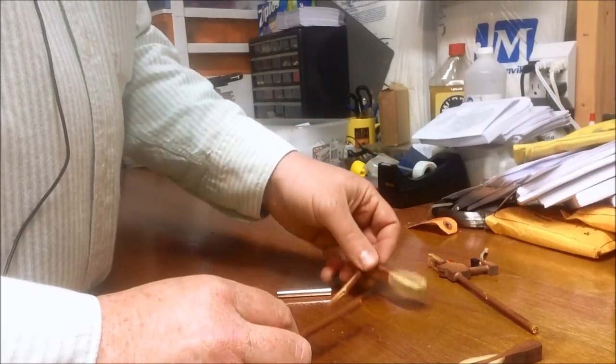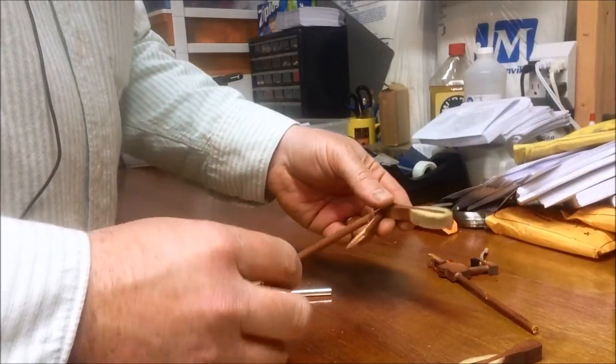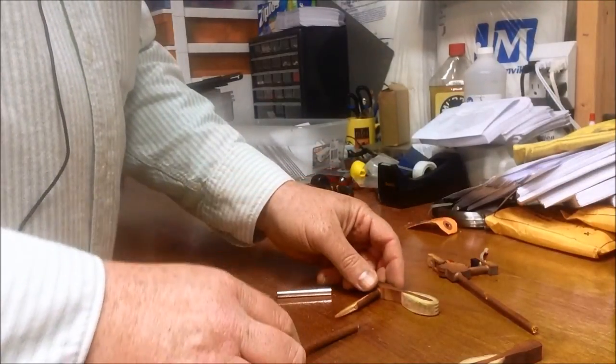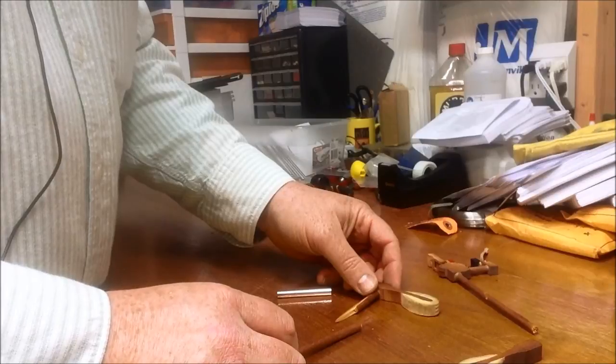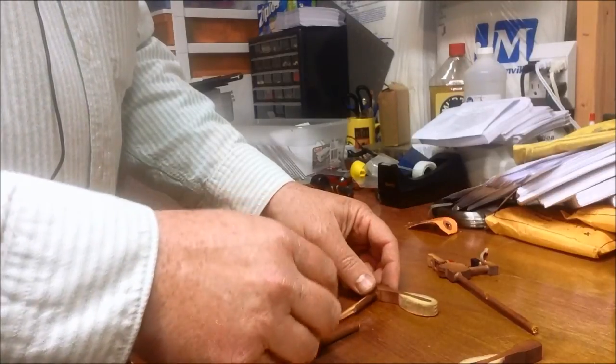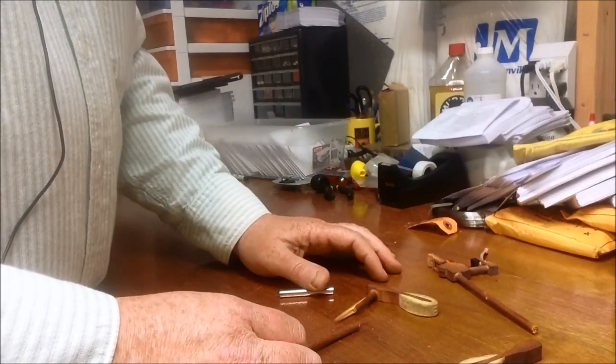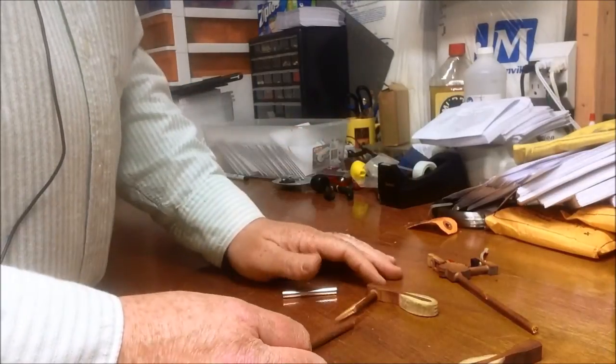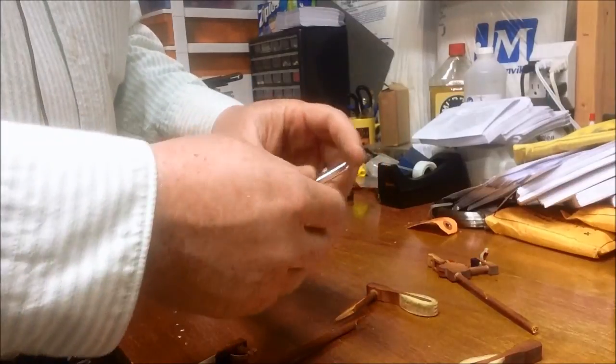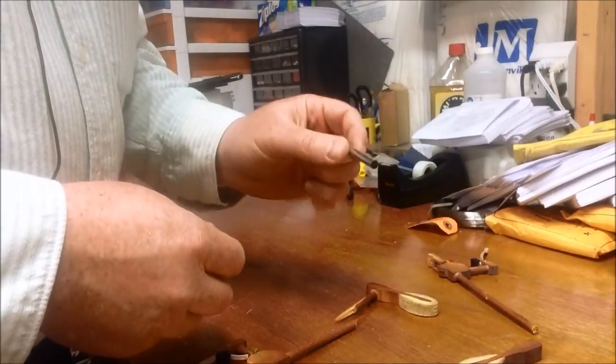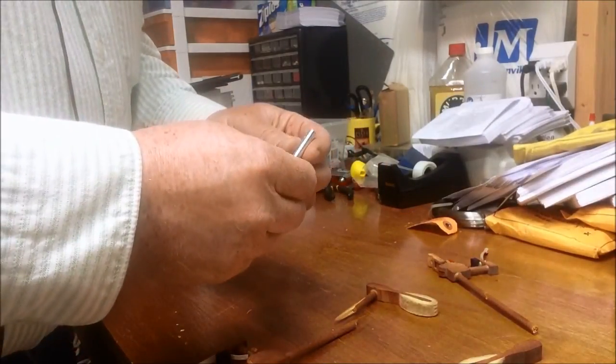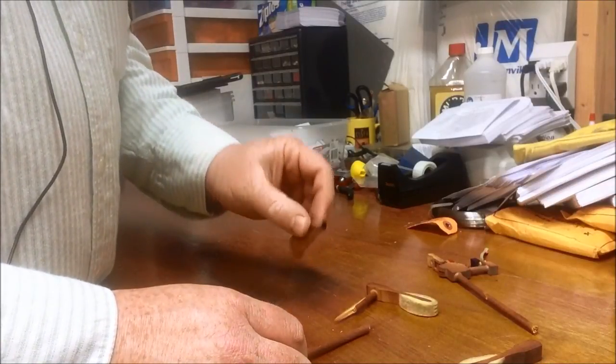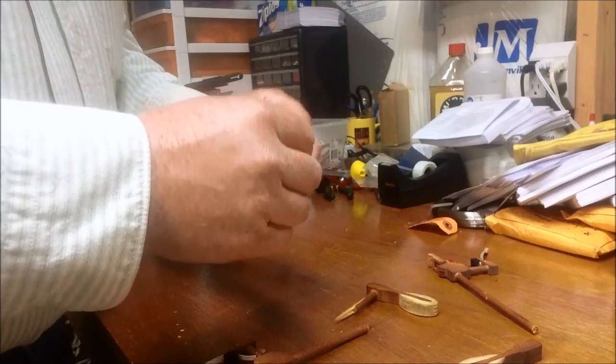You can also use a clamp. Sometimes I've even used thread to clamp the shank once it's been glued. Just wrap some thread around it and once the glue is dried you can take the thread off or you could leave it on too. It doesn't add much weight. These are pretty light, so the amount of weight that it adds is minimal, so it may not be crucial for adding too much weight.